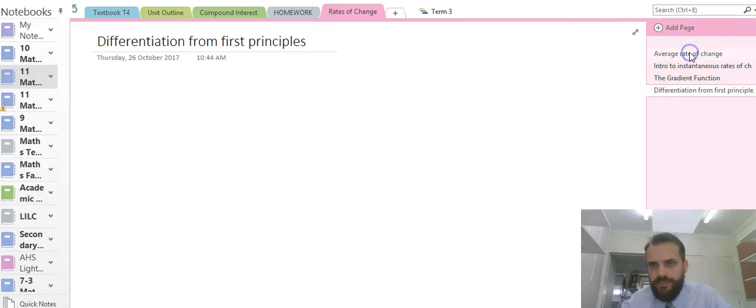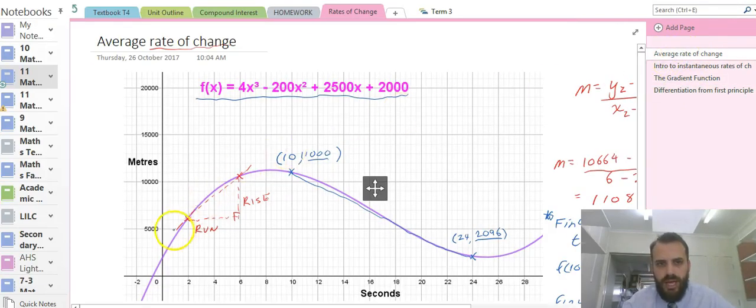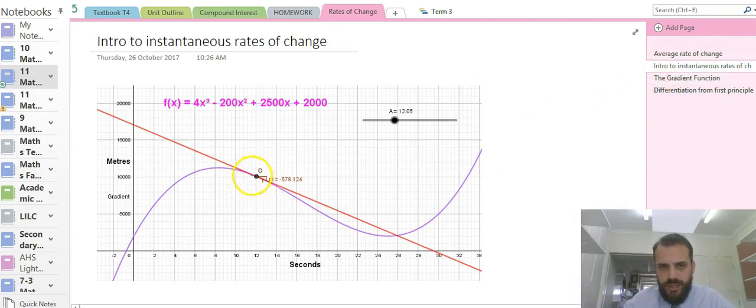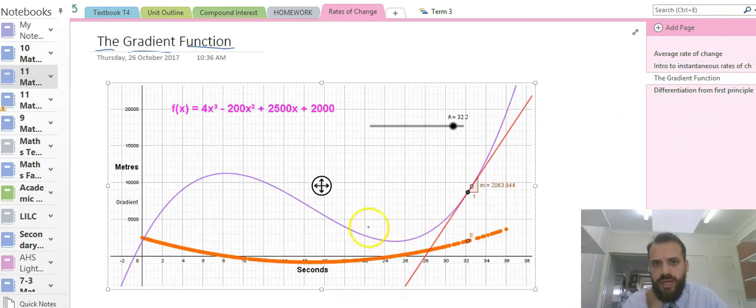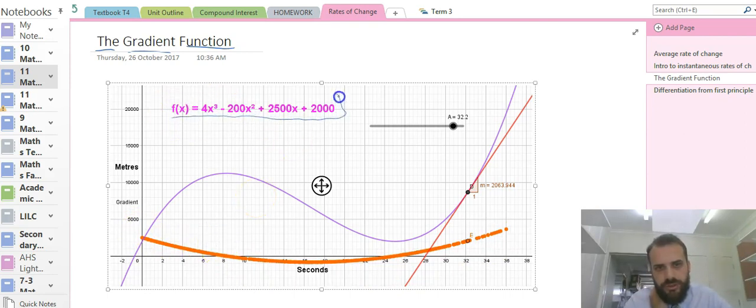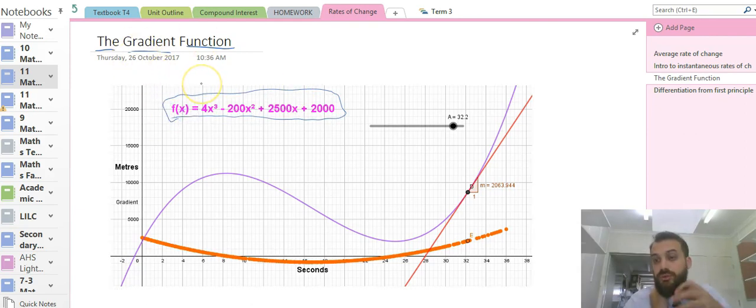Now it's all being built. You'll remember we've spoken about average rates of change before, finding two points, drawing a line between them, finding rise over run. You'll also remember we've talked about instantaneous rates of change, taking those two points and moving them closer and closer and closer together until they're almost touching. You'll also remember that we talked about the gradient function. If I know a function and I graph the gradient of that function at each point, I get this nice gradient function here. Now there is a way to look at the original function and calculate what the gradient function is. There is an easy way and there is a difficult way.